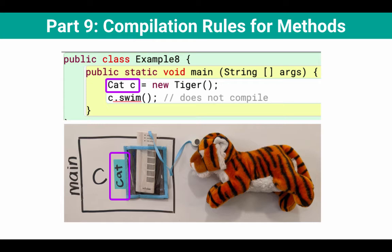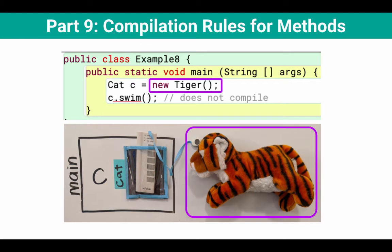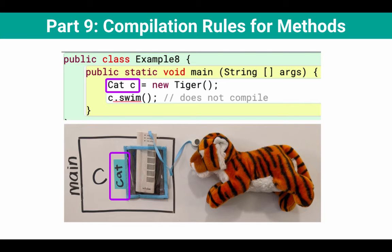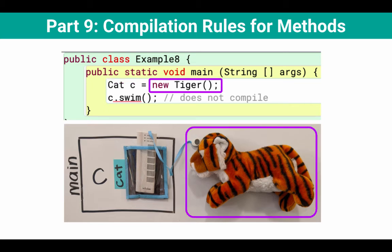Java will look inside the Cat class to see if there is a swim method, and only if it can access a swim method from the Cat class will that compile. But remember, the type of the object is what we use to actually look for the method when executing it. Here's a key distinction: we use the type of the variable to determine what compiles, and then when we actually want to run the code, we use the type of the object to look for that code.